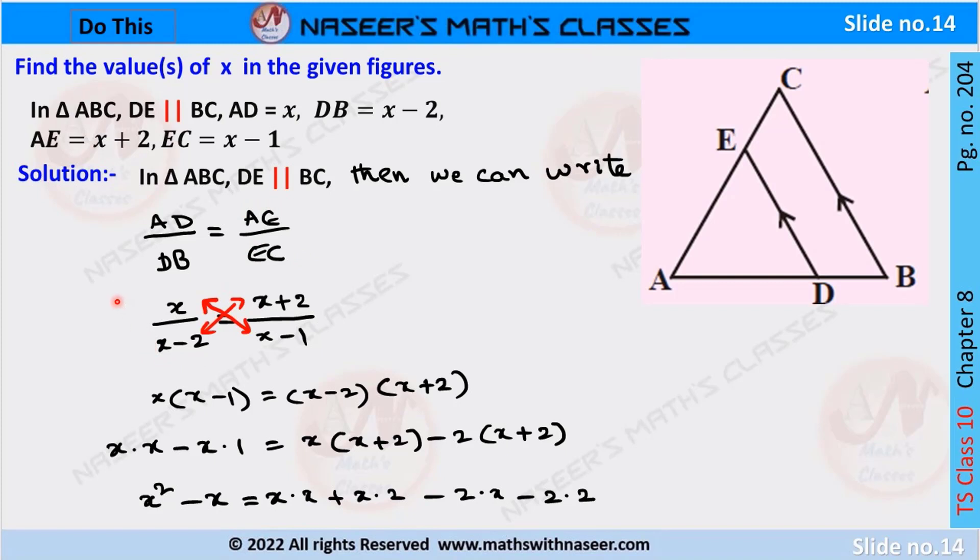By substituting the values we get x by x minus 2 is equal to x plus 2 by x minus 1. After cross multiplication we can write it as x into x minus 1 is equal to x minus 2 into x plus 2.